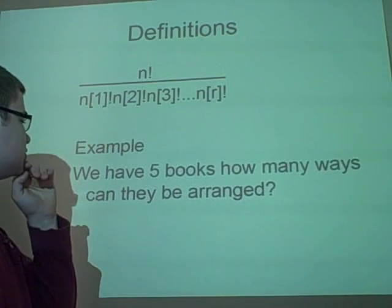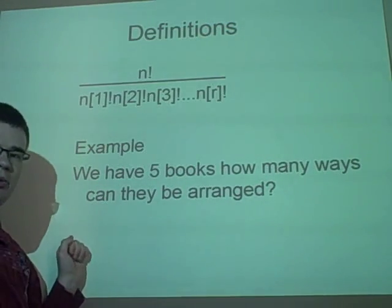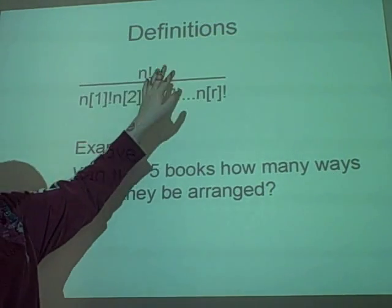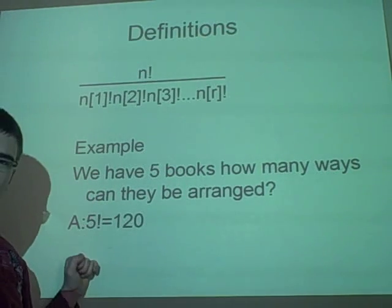So, this is your first example. You've got five books on the shelf, how many ways can it be arranged? Five books, so five factorial divided by one factorial, one factorial, so five factorial, which is 120.